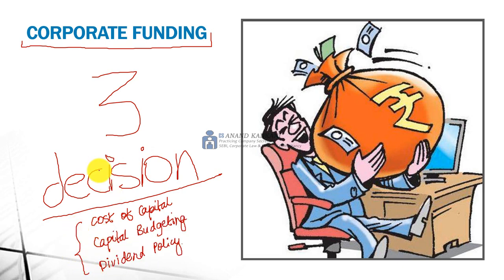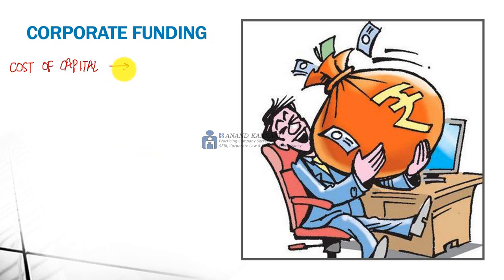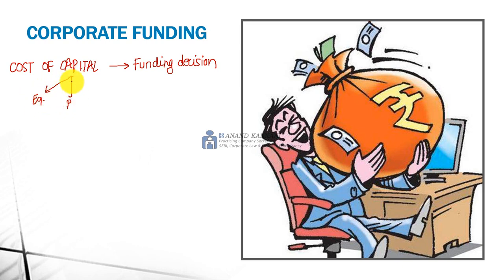When I talk about Cost of Capital, it becomes your funding decision — where you need to decide how to raise funds. If you check the capital broadly, you have three sources: one is equity, another is preference, and next is debt. Whatever you get to the subsets, they will fall under these. Like compulsory convertible preference share, redeemable preference share, irredeemable preference share, then you will get different varieties of debt, equity share ordinary, equity share with differential voting rights, and sweat equity.